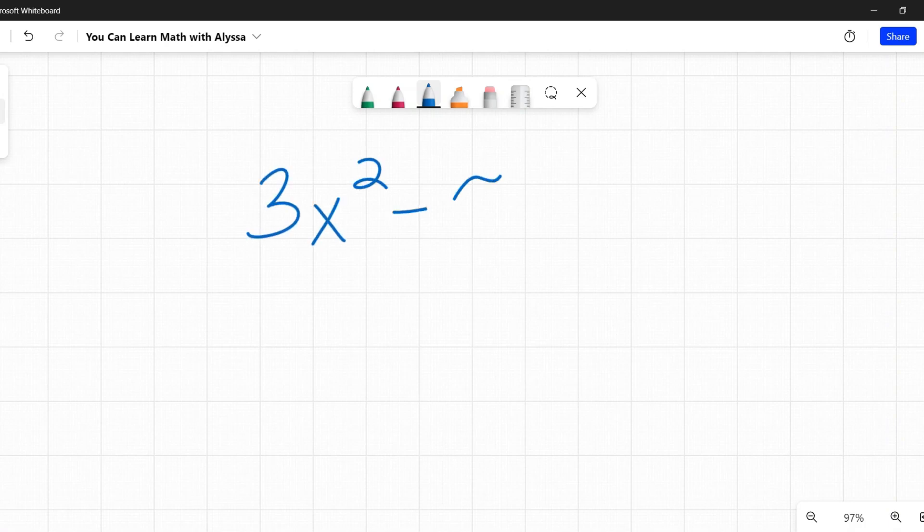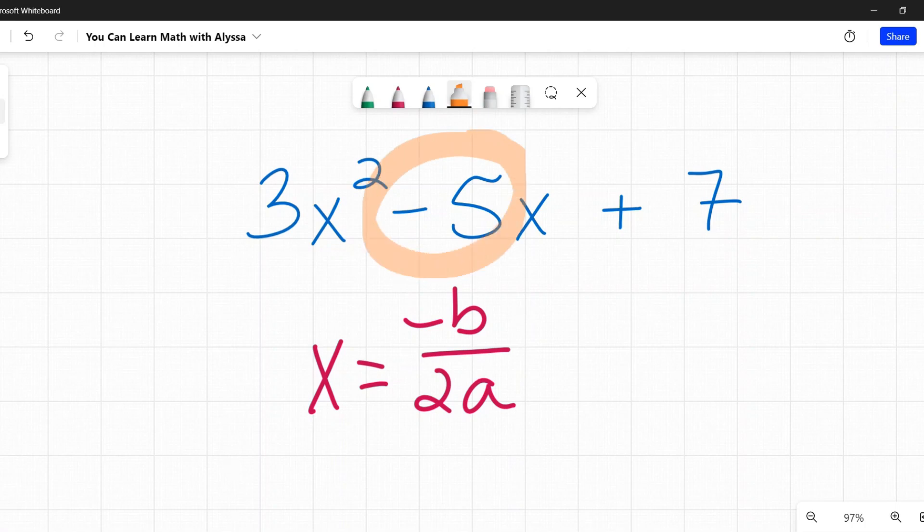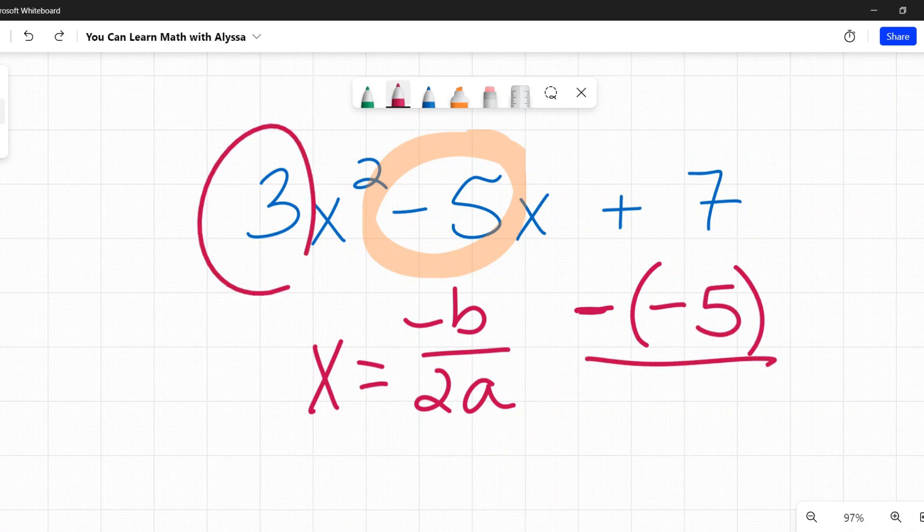Let's say I had 3x squared minus 5x plus 7. Our formula is x equals negative B over 2A. So what is my B? It is negative 5. That negative goes with it. This is key. So that negative that's here is part of that equation. This negative that's up here is attached to that 5.